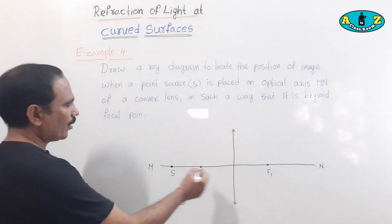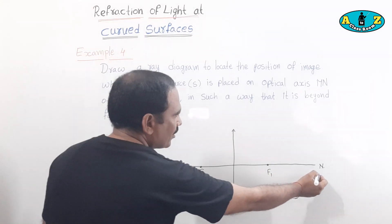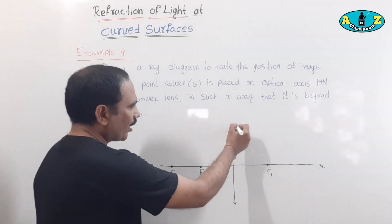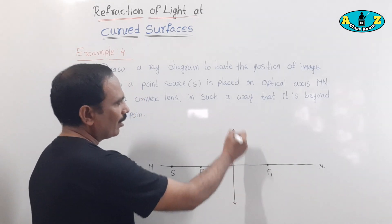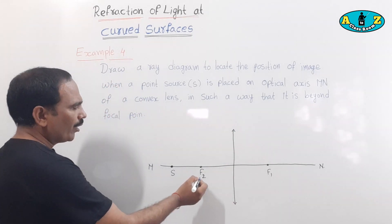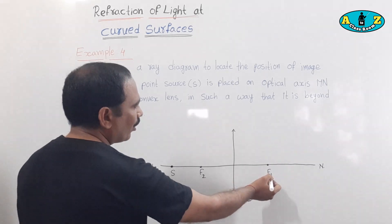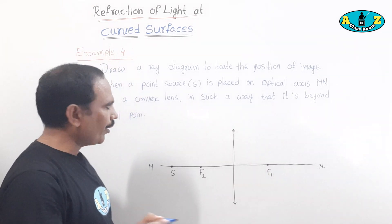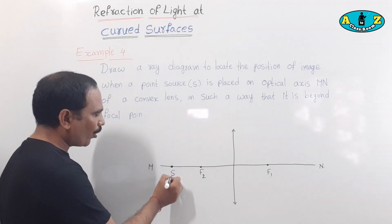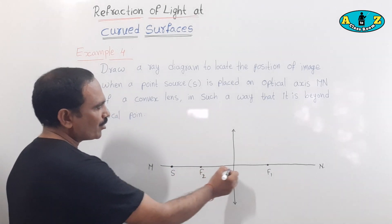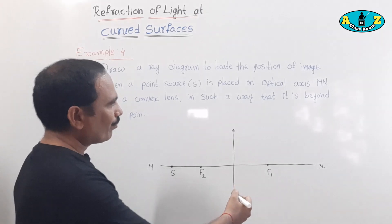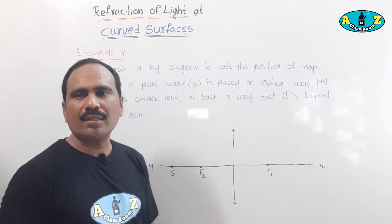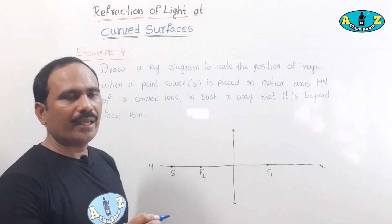To understand the question: MN is the principal axis and it is a convex lens with focal point F2 and focal point F1. One point source — a pointed object — S is placed on the principal axis. We need to identify the image on the second side of the lens and draw the ray diagram.